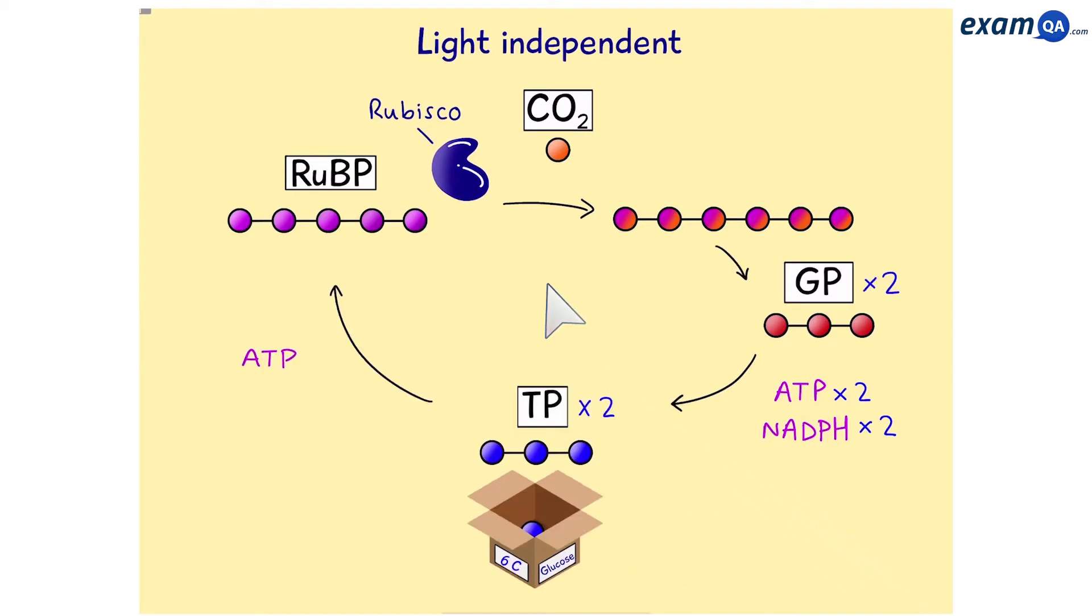For now, make sure you remember this. It's a simplified diagram of the general cycle. 1 RuBP plus 1 carbon dioxide gives you 2 GPs and 2 TPs. And remember that each time the cycle spins, we get 1 useful carbon. So, now that we know the general structure, if they ask us to make a sugar with 6 carbons or 5 carbons or even 3 carbons, all we have to do is multiply it. For example, if you want to make a 6 carbon sugar, that means you have to times everything by 6. So remember, this is the general structure of the Calvin cycle, named after the scientist who discovered it.